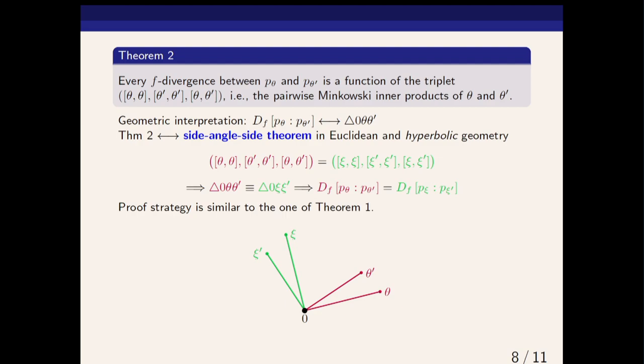This is the second theorem that we obtain in the paper. The f-divergence between two such hyperbolic distributions can be expressed as a function of three canonical terms, which are Minkowski inner products of the pairwise parameters.